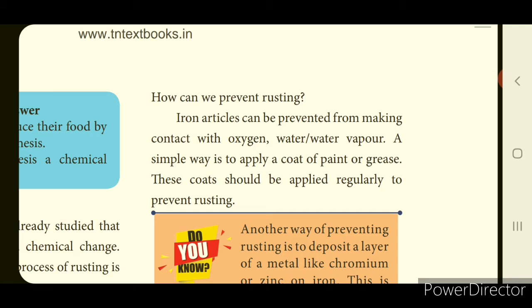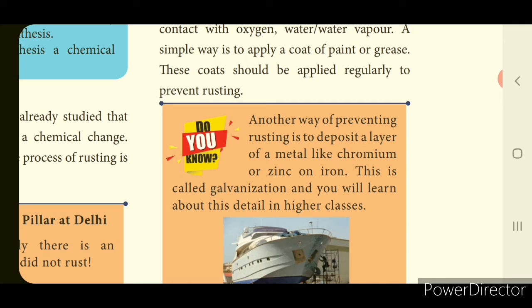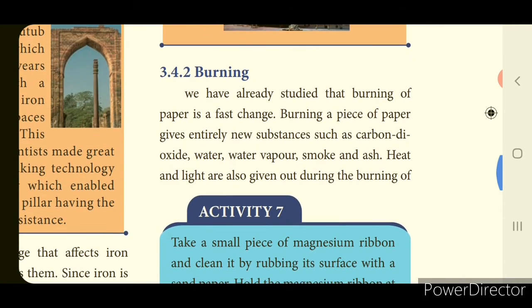To prevent rusting, iron articles can be prevented from making contact with oxygen or water vapor. A simple method is applying a coat of paint or grease regularly. Another method is depositing a layer of metal like chromium or zinc on iron — this is called galvanization. Galvanization means applying zinc on iron to prevent rusting.